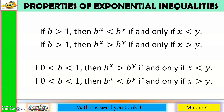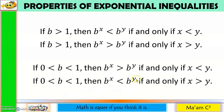Here are some properties of exponential inequalities. If b is greater than 1, then b raised to x is less than b raised to y if and only if x is less than y. It follows that b raised to x is greater than b raised to y if and only if x is greater than y. Also, if b is less than 1 but greater than 0, then b raised to x is greater than b raised to y if and only if x is less than y, and b raised to x is less than b raised to y if and only if x is greater than y.